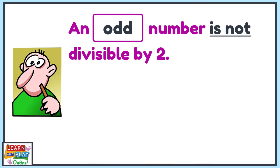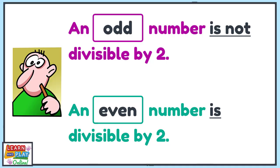Let's first look at the difference between an odd number and an even number. An odd number is not divisible by 2. An even number is divisible by 2.